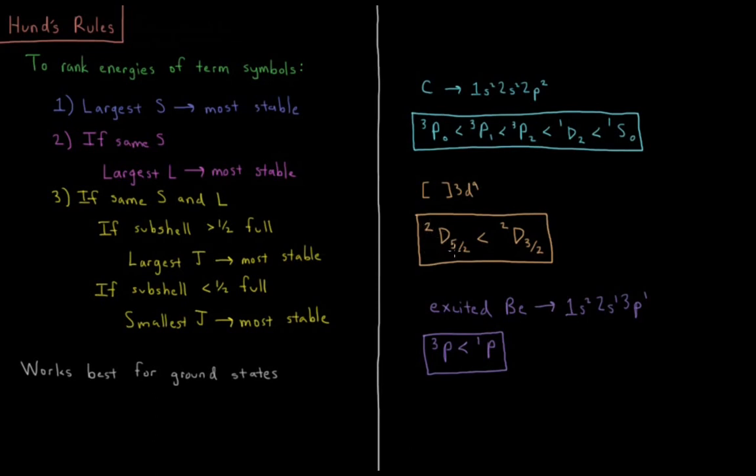So doublet D5 halves has a larger value of J, being more than half full, so it is lower in energy than doublet D3 halves.